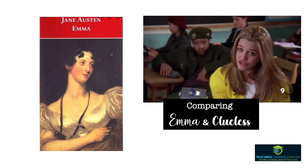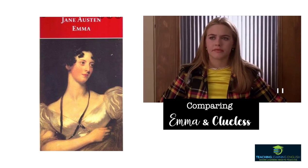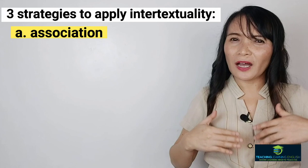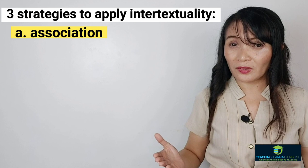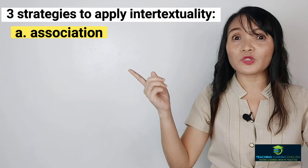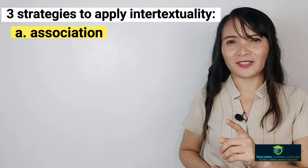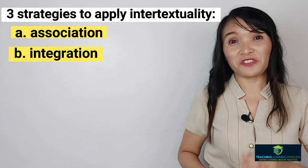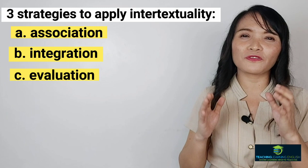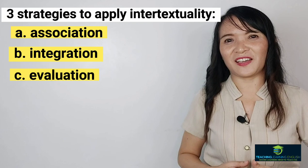Here are some strategies for appreciating intertextuality. The first is associating — you should associate the text, linking past texts to a present text, making mental pictures or maps of a topic and connections to prior knowledge and experiences. Next is integrating, meaning background knowledge is applied to a present text. The third is evaluating — this consists of personal judgments, values, conclusions, and generalizations in comparing past and present texts.